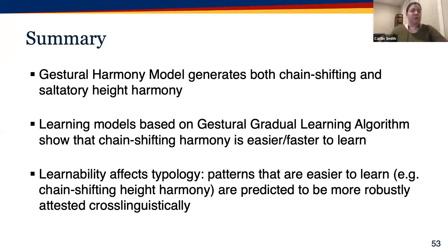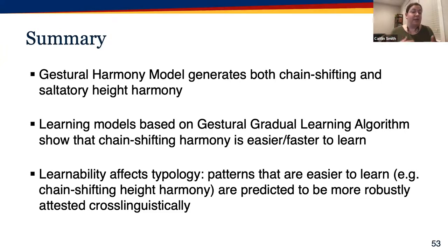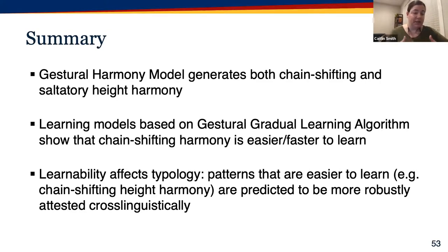Summarizing: the gestural harmony model generates both chain-shifting and saltatory height harmony, but our learning models based on the gestural gradual learning algorithm show that chain-shifting harmony is easier and faster to learn. Subscribing to the idea that learnability affects typology, patterns easier to learn like chain-shifting height harmony are predicted to be more robustly attested cross-linguistically — which is exactly what we find for these derivationally opaque height harmony patterns.